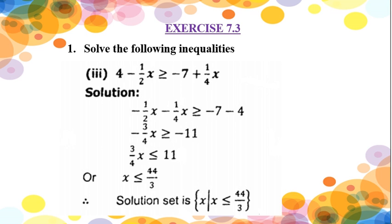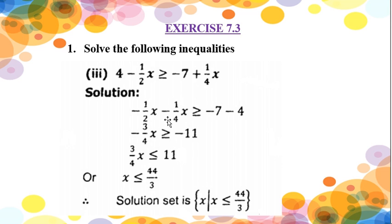Now we are moving to exercise 7.3, question number 1. Let's solve the following inequalities — this is part number 3: x - ½x is greater than or equal to -7 + ¼x. Now starting the solution — combining the variables to the left hand side. This ¼x is adding on the right side; when I move it to the left side it will be opposite, so plus becomes minus. So: ½x - ¼x is greater than or equal to -7, and with the -4 it is.